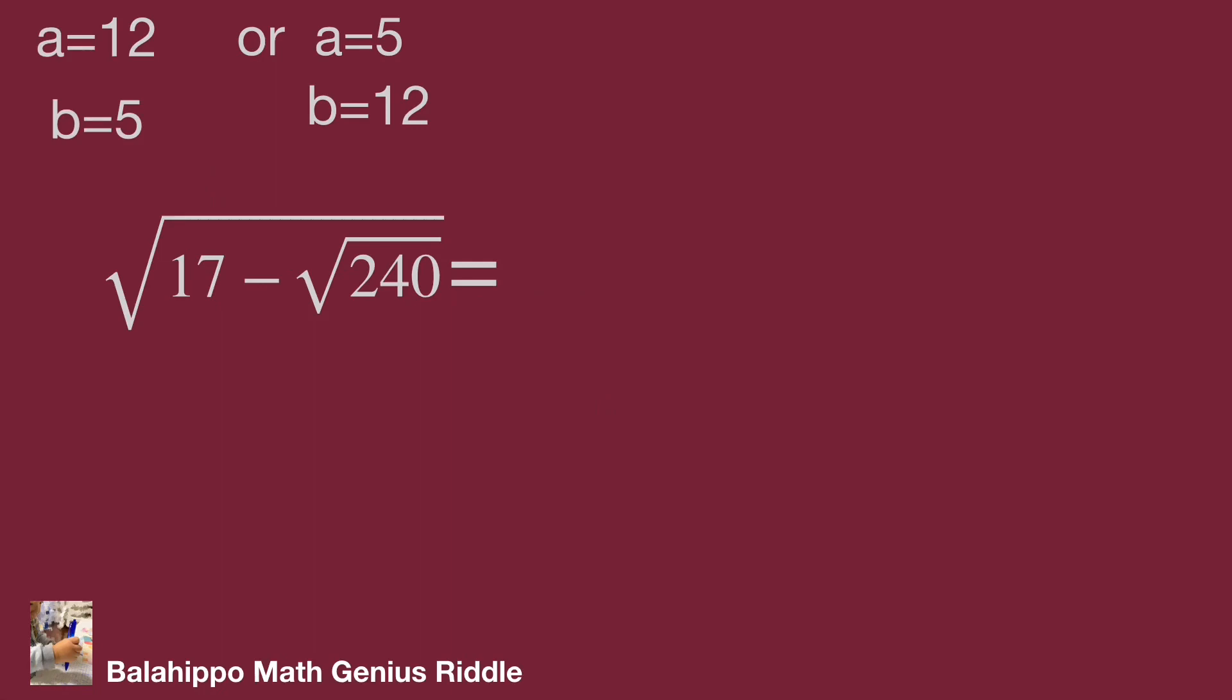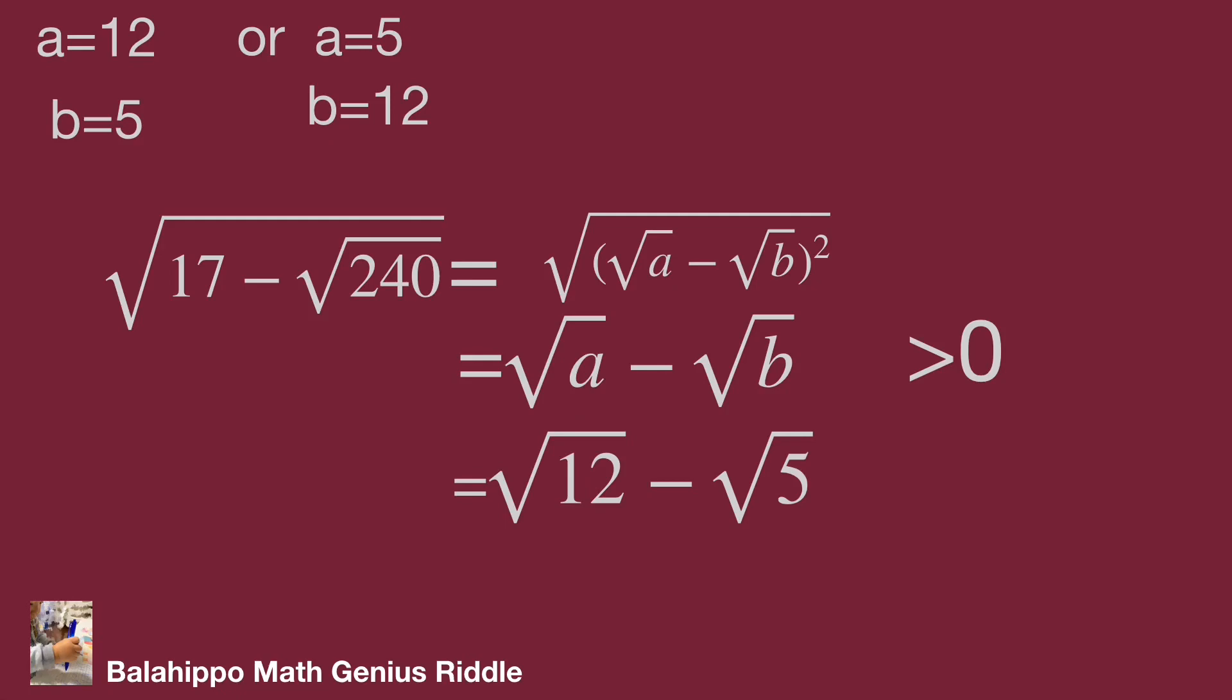Back to the equations. Square root of 17 minus square root of 240 equals square root a minus square root b, and square root a minus square root b is larger than 0. So a equals 12 and b equals 5. It equals square root of 12 minus square root of 5. This becomes 2 times square root of 3 minus square root of 5.